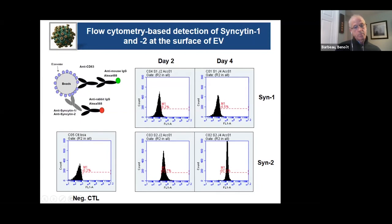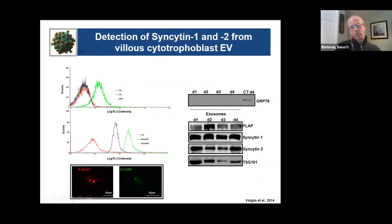The first question was to determine whether we could detect syncytin-1 and syncytin-2 protein on the surface of these vesicles. Using a flow cytometry-based assay where extracellular vesicles are overlaid on beads, we could confirm that at different times of harvesting, we could indeed detect syncytin-1 and syncytin-2 at the surface. We used CD63 as a control, and also performed western blot analysis showing that alkaline phosphatase of the placenta was present on the exosomes, and that syncytin-1 and syncytin-2 were seemingly present in these preparations.